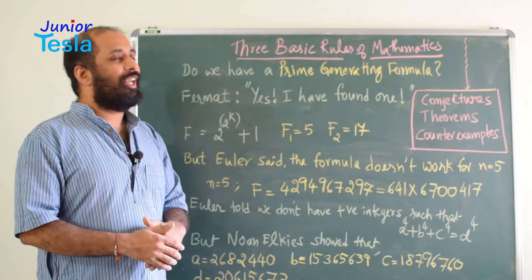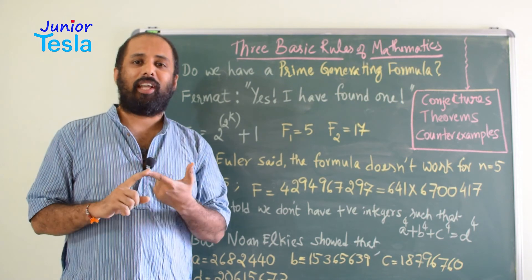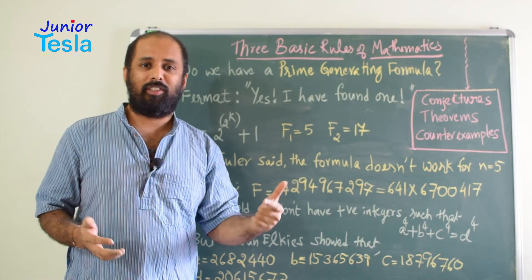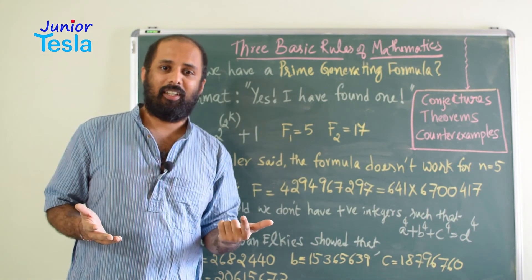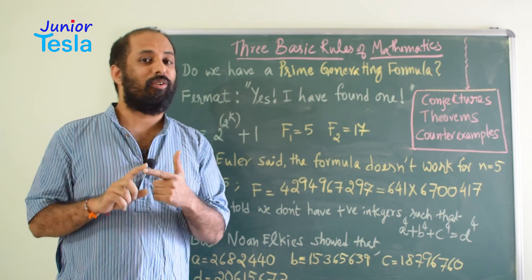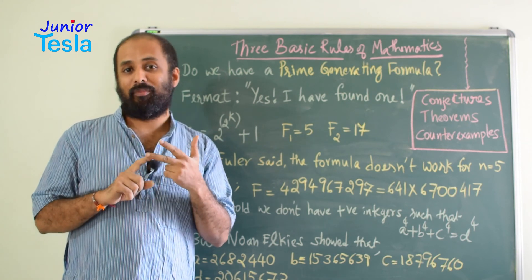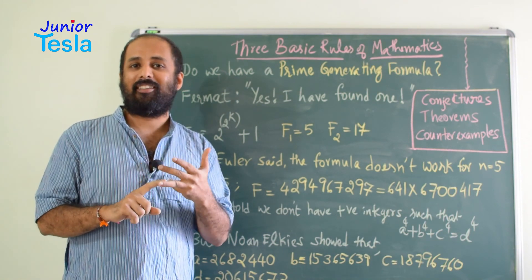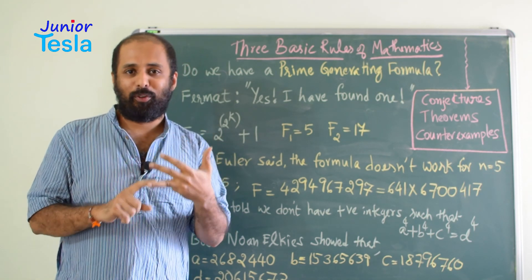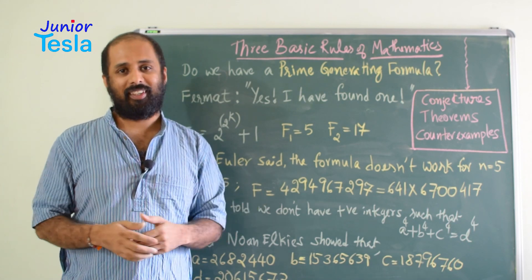Now let us come back to the three basic rules of mathematics. Rule number one: do not accept anything without proof. Rule number two: do not accept anything without proof. And rule number three: do not accept anything without proof. In mathematics, if something does not have a proof, it need not be accepted. And once it is proved, it can be considered as the truth. Thank you.